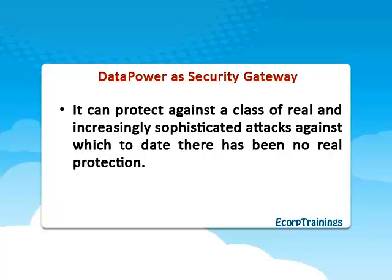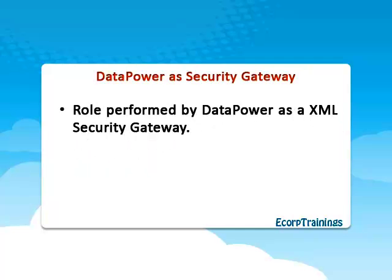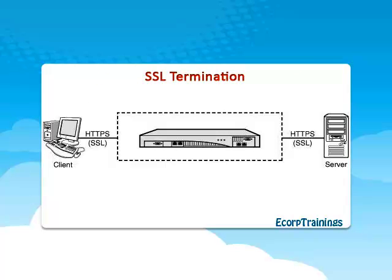DataPower can also protect against a class of real and increasingly sophisticated attacks against which there has been no real protection. The DataPower application firewall services include SSL termination: the inbound HTTPS connection from the client is terminated at DataPower, messages are then processed on the device, and when an explicit decision is made in a processing policy, the messages are sent on to the backend server.